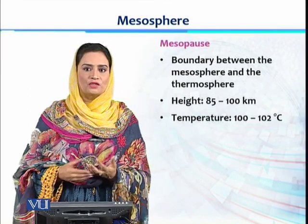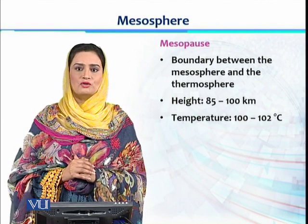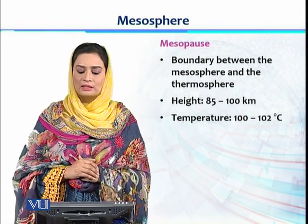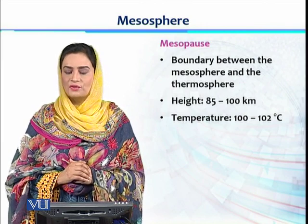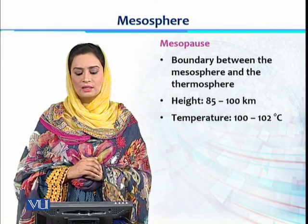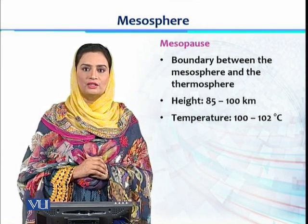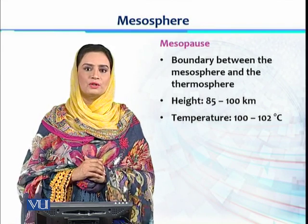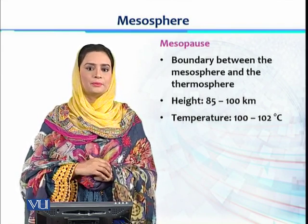The mesosphere is joined to the next layer above it, which is called the thermosphere. There is a transitional boundary layer between the mesosphere and thermosphere which is called the mesopause. The height of the mesopause is 85 to 100 km, and the temperature here can be as low as -100 to -102 degrees centigrade.